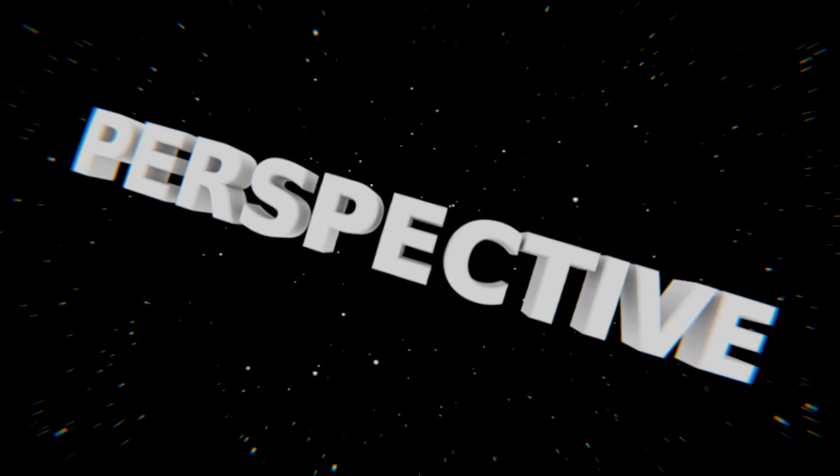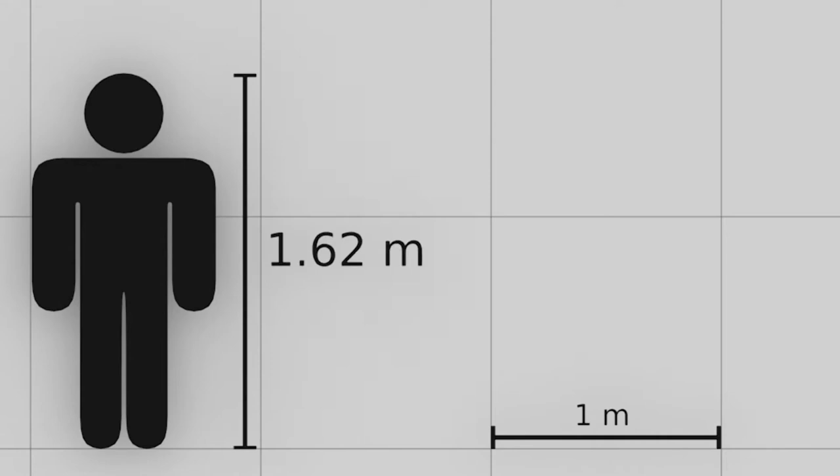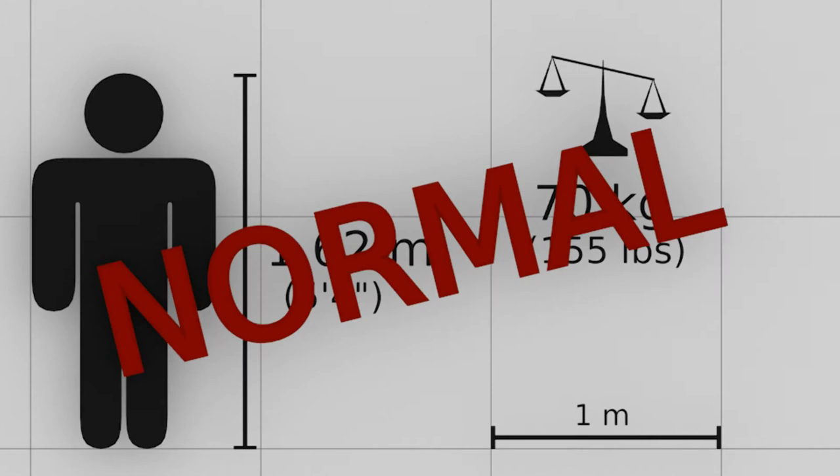Let's start by looking at animals. After all, we're just another animal living on this planet. The average human is 1.62 meters tall and weighs 70 kg. For us, that's considered normal. But what about other animals? How do we compare to them?